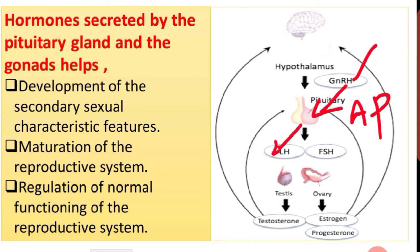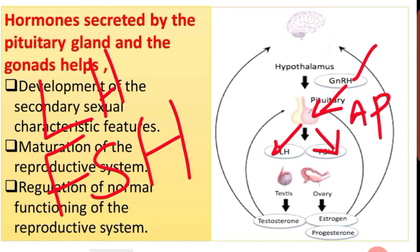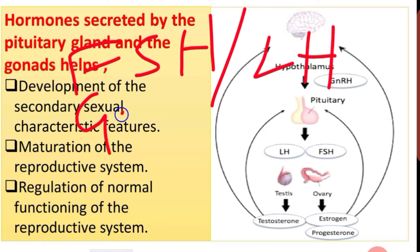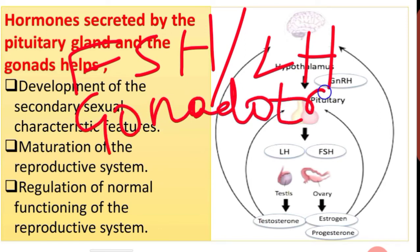The anterior pituitary secretes luteinizing hormone (LH) and follicle stimulating hormone (FSH). LH stands for luteinizing hormone and FSH stands for follicle stimulating hormone. These hormones are gonadotrophic hormones. So hypothalamus stimulates the anterior pituitary to secrete gonadotrophin hormones — FSH and LH.